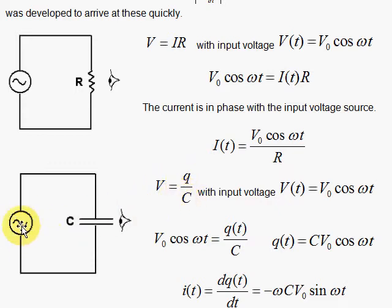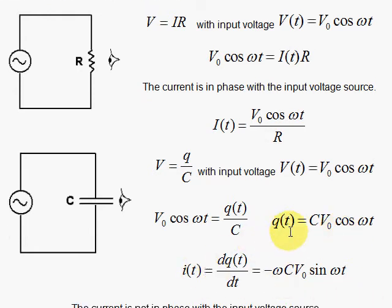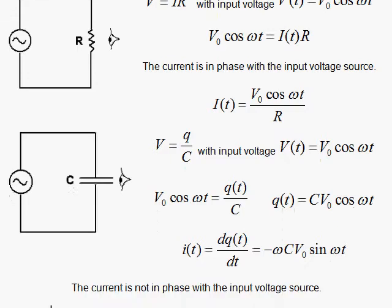Now we put alternating current in, which switches the charge back and forth. Since the voltage across the capacitor goes with Q, it is the charge that is in phase with the voltage, not the current. We're going to show that the current is not in phase with the voltage by solving for Q. Q equals V times C, and taking the derivative to get the current gives us minus omega times a sine — so the current is doing something different than the voltage. To understand this, we introduce the phasor.